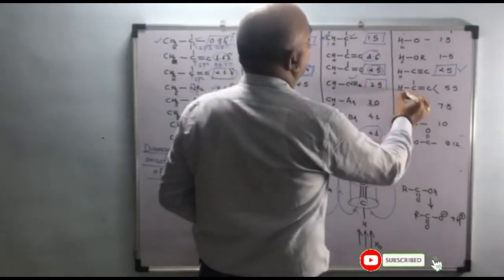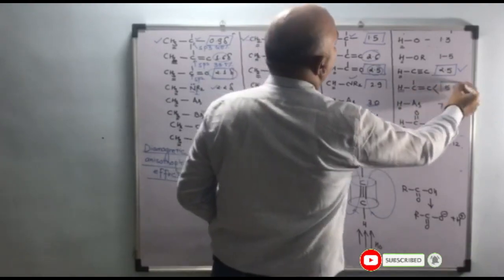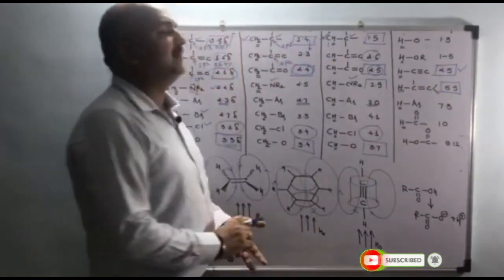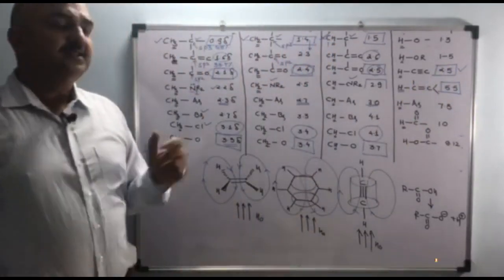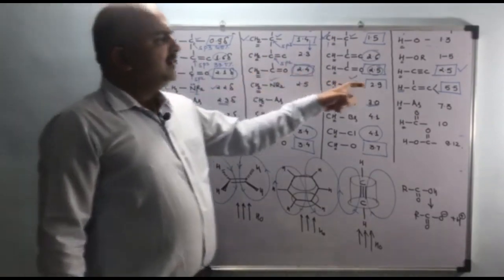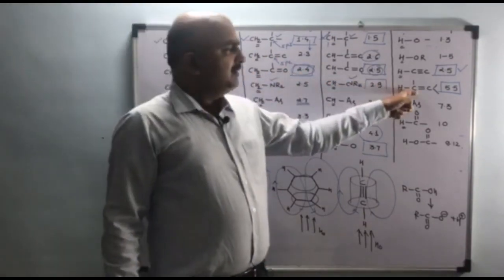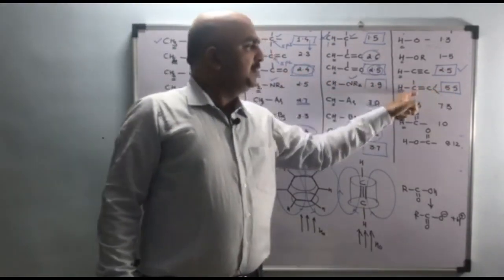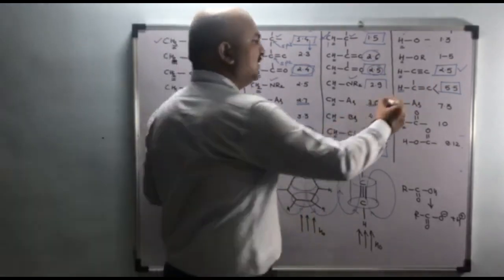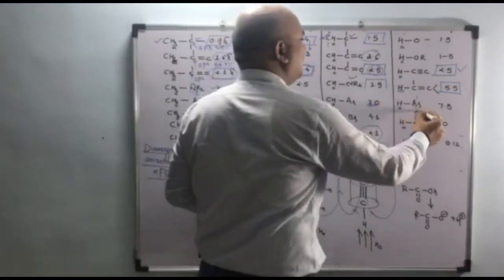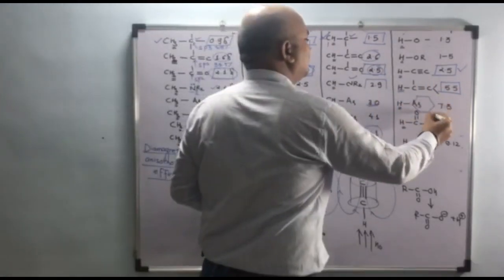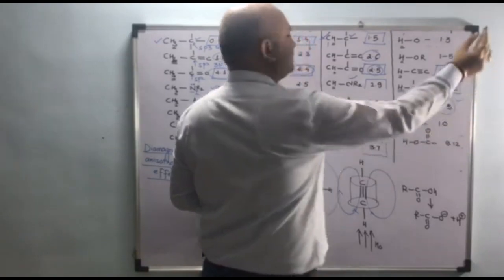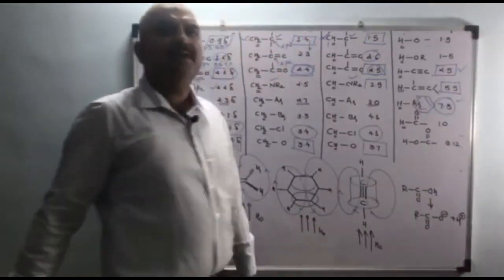The second abnormality is allylic protons — when a proton is attached to a carbon adjacent to a C=C double bond, it shows a higher value than expected. The third abnormality is related to a C–C single bond attached to a C=C double bond, where there is also a greater difference than expected.